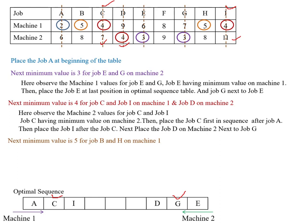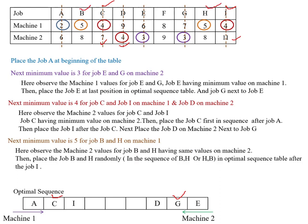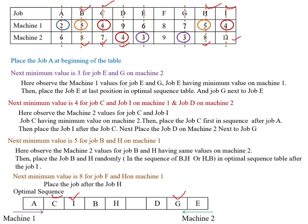The next minimum value is 5 for job B and job H on machine one. We observe the machine two values for job B and job H — they also have the same values. Then we place job B and H randomly; in the sequence we place B, H or H, B in the optimal sequence table after job I. Here I placed B and H — this may also be H and B and we will get the same values. The next minimum value is job F on machine one, so place job F after job H.